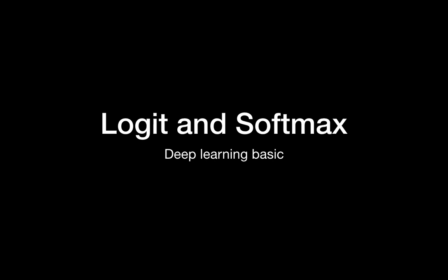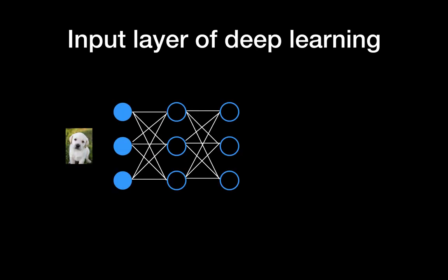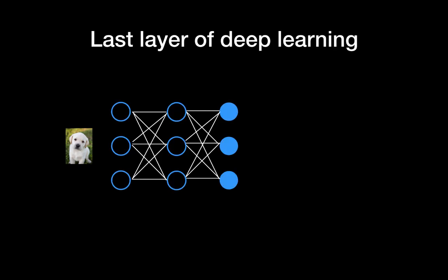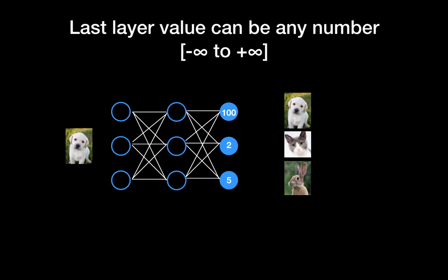Let's quickly go over what logit and softmax are. If you are working on a deep learning model for multi-class classification, you might have heard about softmax and logit. In this example, we have an input — a cute dog — which is vectorized for the input layer, passed through hidden layers, and reaches the last layer with no activation yet, giving output values ranging from minus infinity to plus infinity.